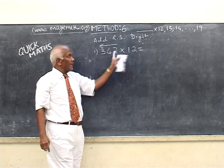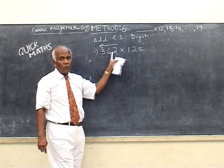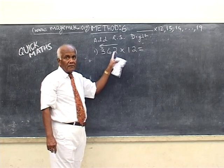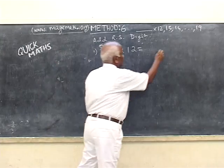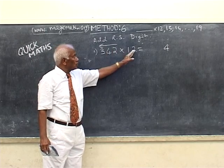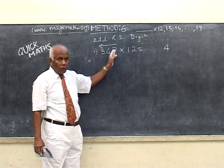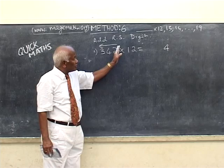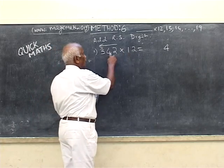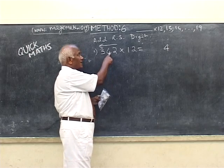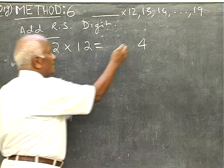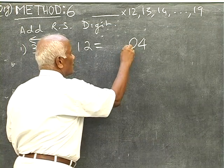So 2 will multiply 2, 2 times 2 is 4. There is no right side digit to add, so it is just 4. Next, 2 times 4 is 8. 8 plus 2, adding the right side digit. 8 plus 2 is 10. So 0, carry 1.